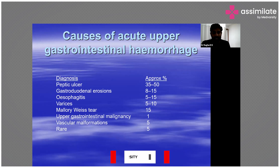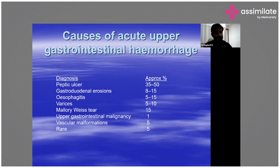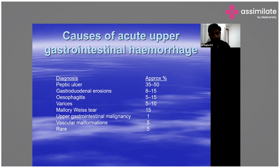Erosions are the second leading cause, and esophagitis — inflammation or a break in the mucosa — is another cause. Esophageal or gastric varices are also common causes, though not as common as peptic ulcer disease. Next is Mallory-Weiss tear, where a specific and clear-cut history leads you to the diagnosis. Malignancies and AV malformations or vascular malformations are also causes of gastrointestinal bleeding.